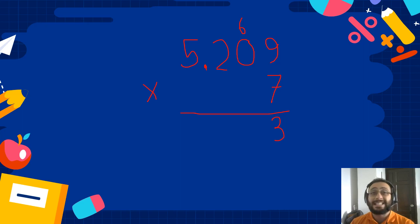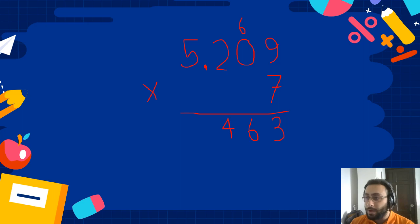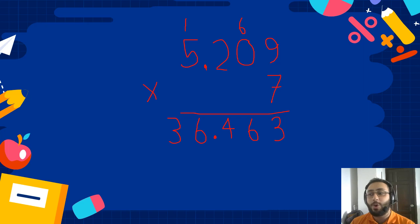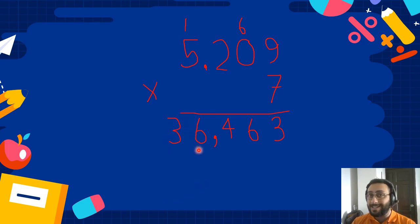7 times 0 is 0. 0 plus 6 is 6. 7 times 5 is 35. 35 plus 1 is 36. So we have the answer: 5,209 times 7 equals 36,463.